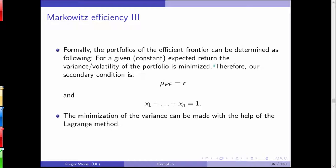Formally, the efficient frontier is derived by minimizing portfolio variance for a given constant expected return A-bar, subject to the constraint that portfolio weights sum to one. This constrained minimization is solved using the Lagrange method.